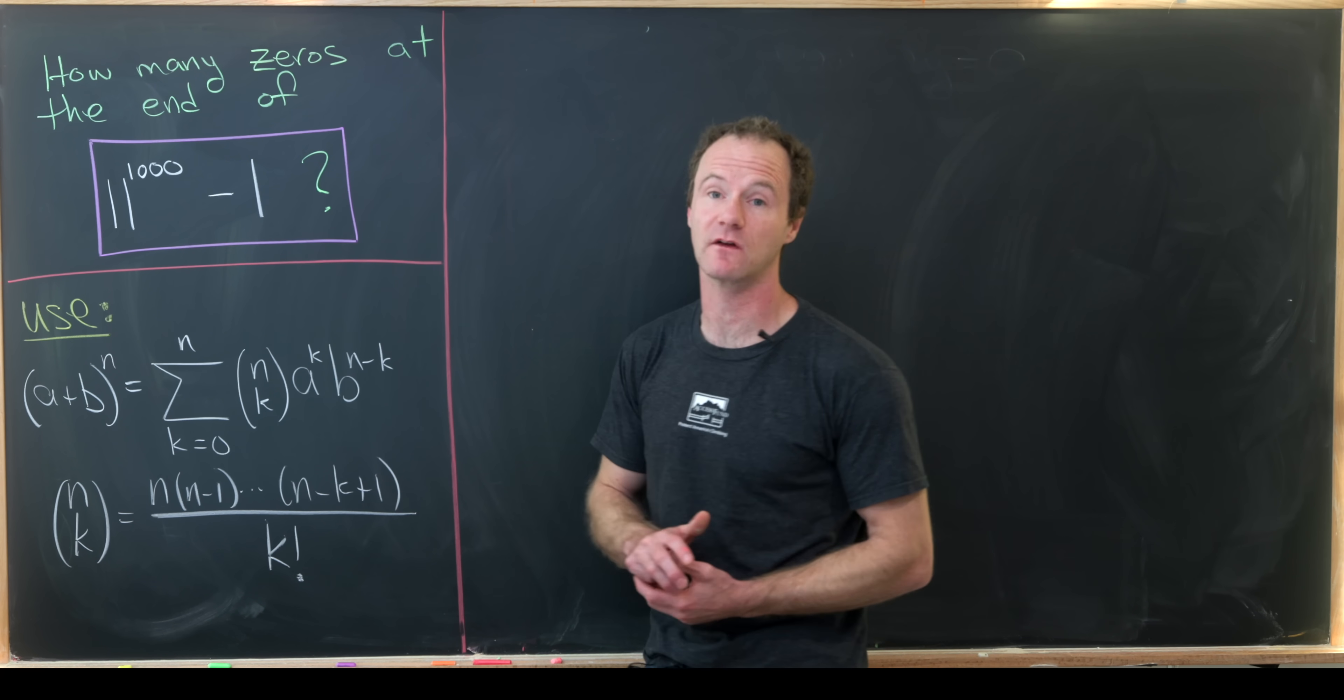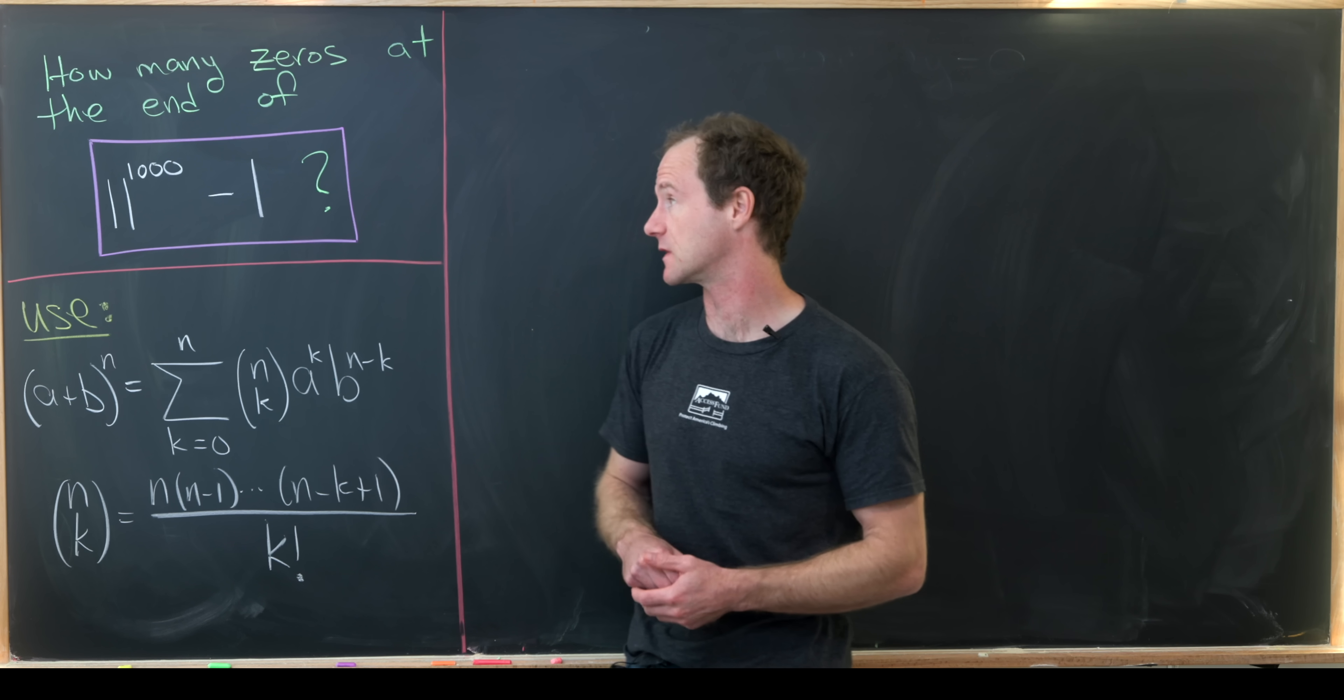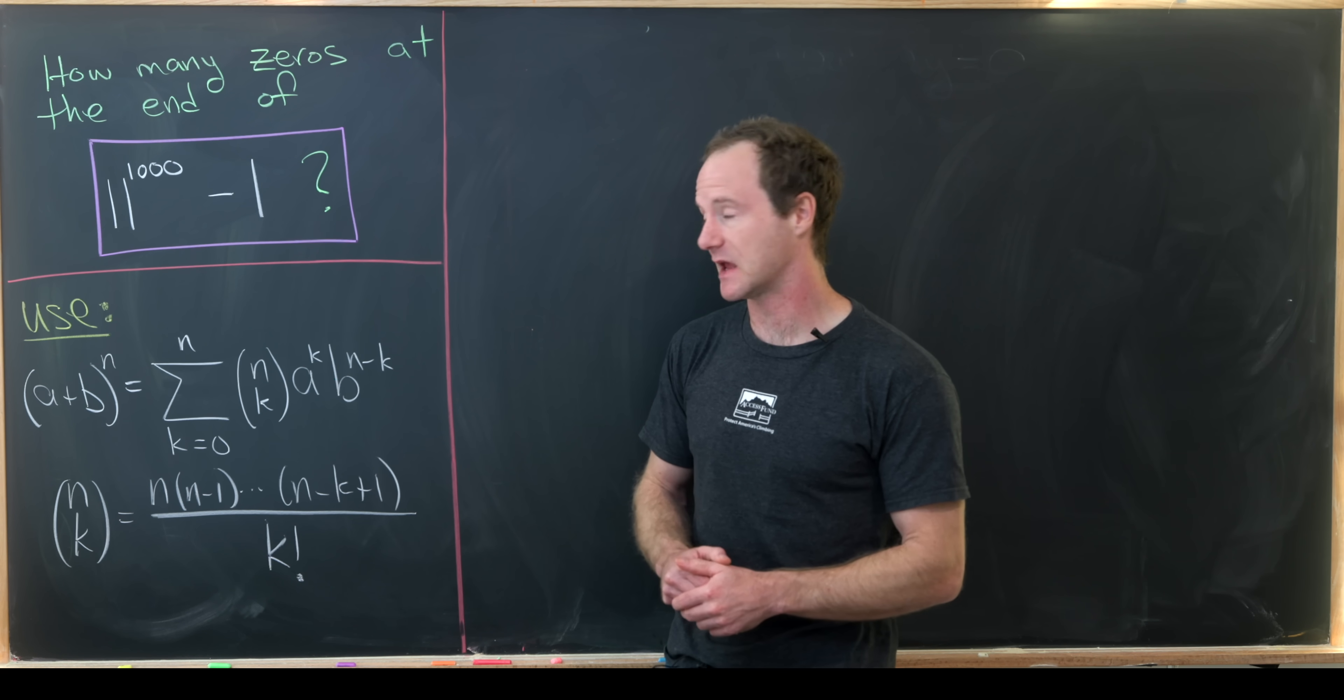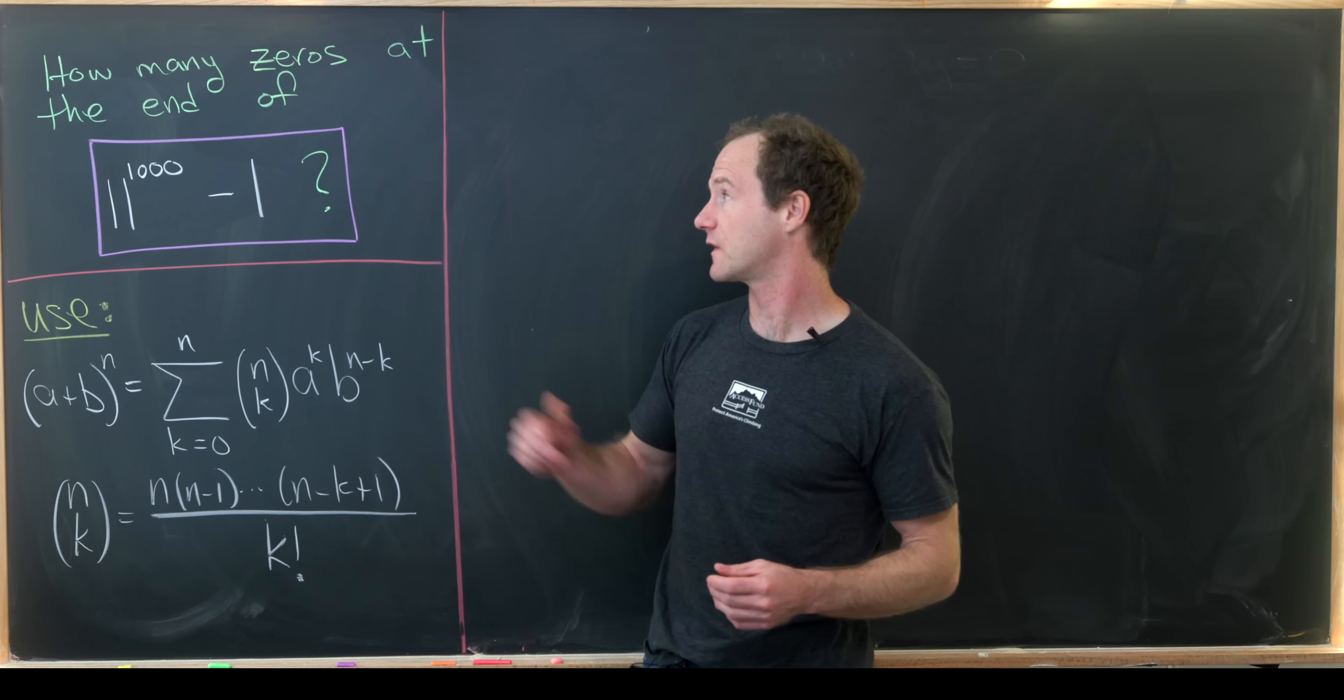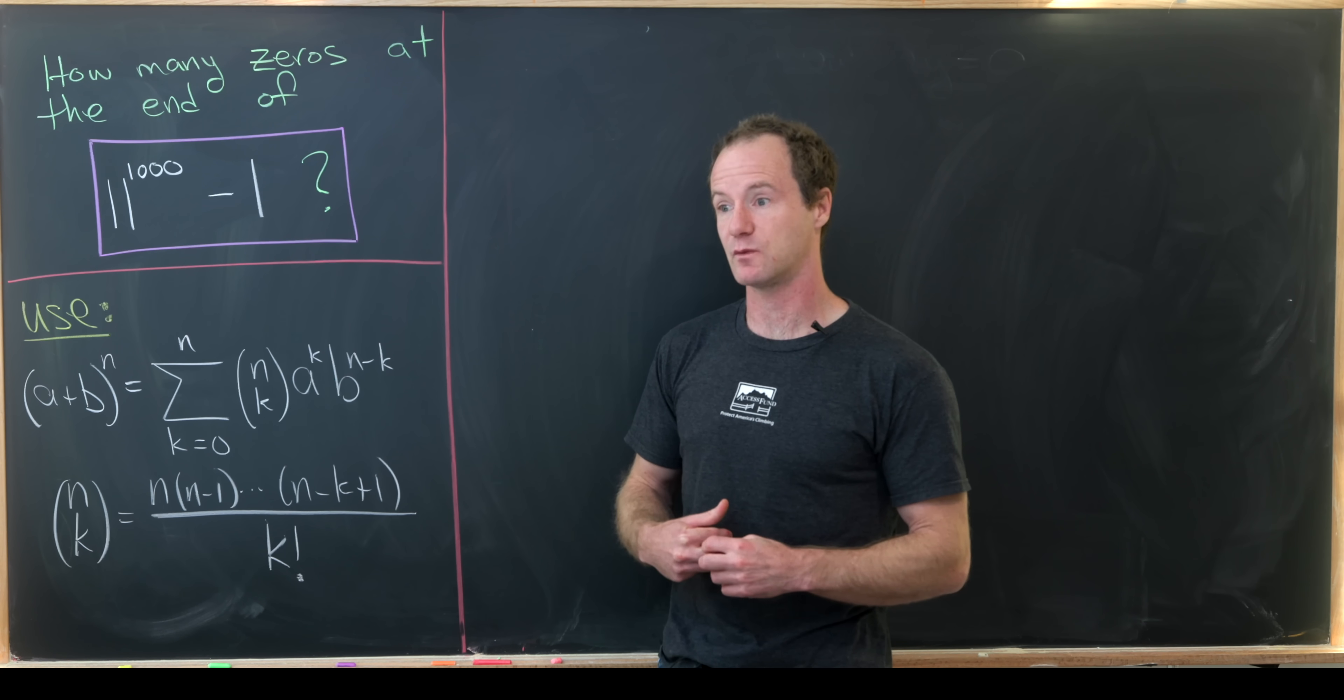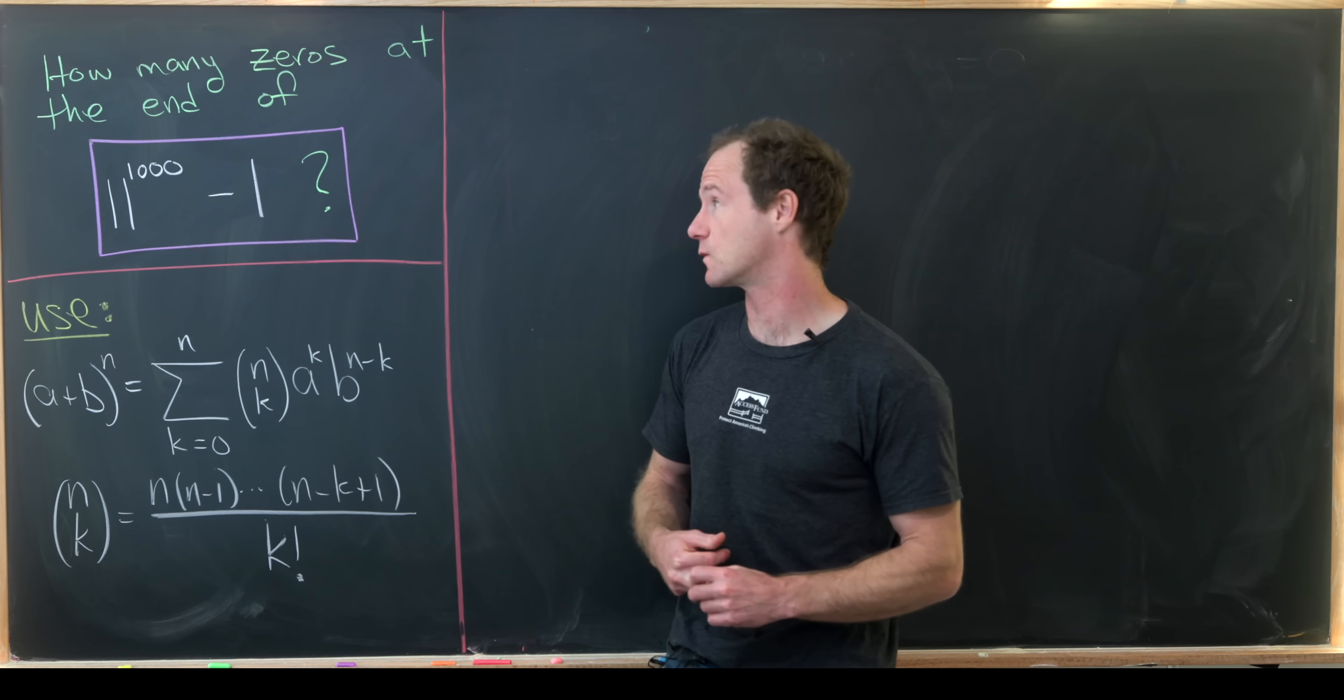So this is a very large number. You can calculate it pretty easily in Mathematica or something, but you definitely wouldn't want to calculate this number out by hand. And so we'll be calculating the number of zeros at the end of this by hand and we're going to use the main tool of the binomial expansion formula.